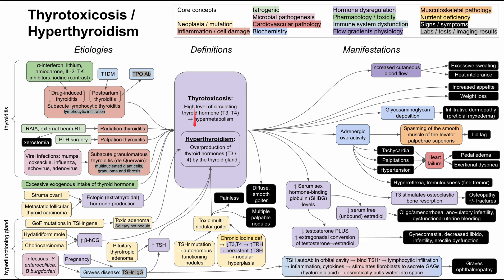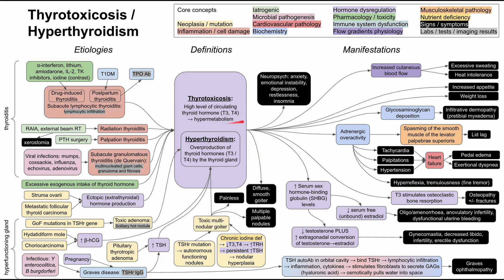Some causes of hyperthyroidism produce a diffuse smooth goiter, differentiated from the solitary hot nodule of toxic adenoma on scintigraphy, or the multiple palpable nodules of toxic multinodular goiter. Lastly, thyroid hormone has neuropsychiatric effects ranging from anxiety, emotional instability, and restlessness to depression and insomnia.